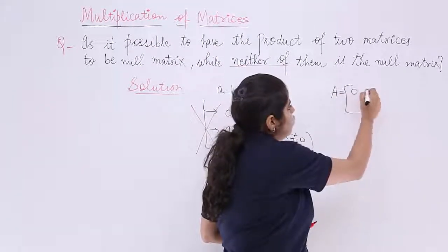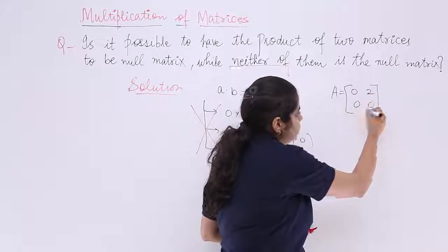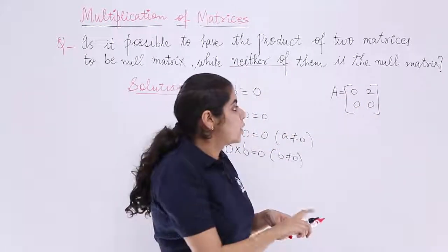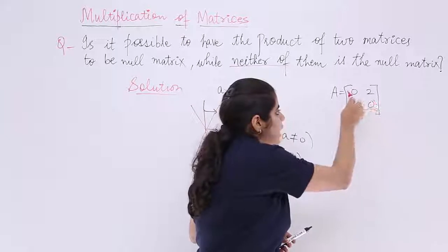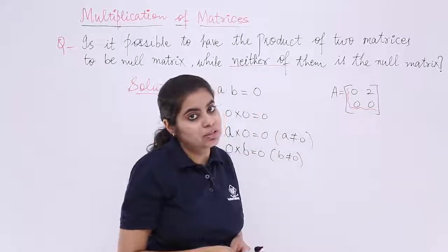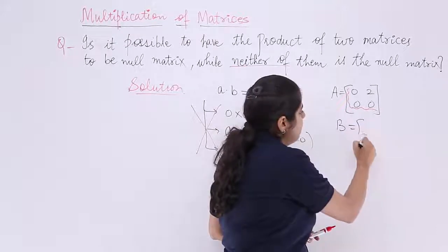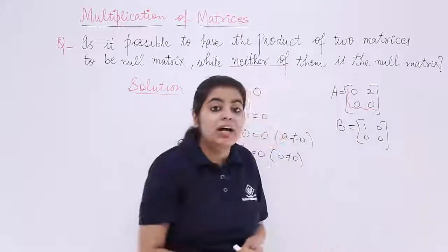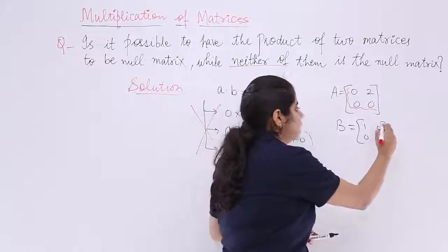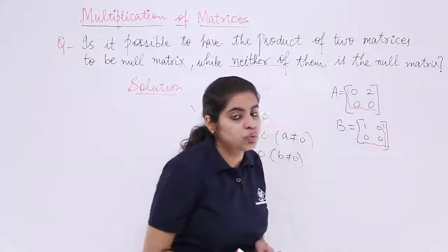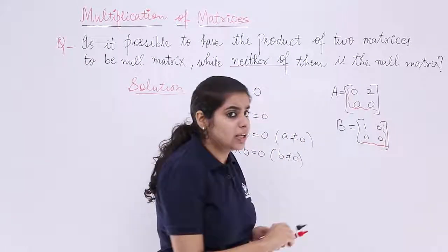Suppose I take the first matrix as A matrix and then I take the values accordingly. I take it as [0, 2; 0, 0]. Why have I taken this? Because I know that these 0s can be helpful while taking the product. And suppose I take a B matrix, and B matrix I take [1, 0; 0, 0]. Again why am I taking it? Because I know that these 0s can be useful. Now let's first try the product.